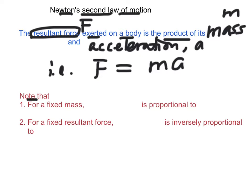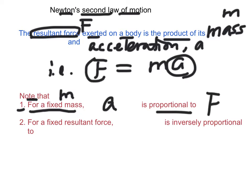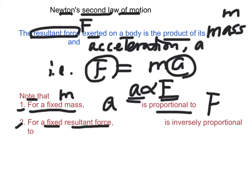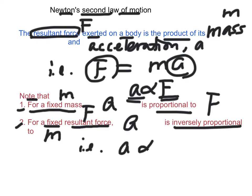For a fixed mass M, the acceleration A is proportional to F. That is, A is proportional to F — greater force gives greater acceleration. For a fixed resultant force F, the acceleration is inversely proportional to mass; that is, acceleration is proportional to 1 over M. That means greater mass has smaller acceleration.